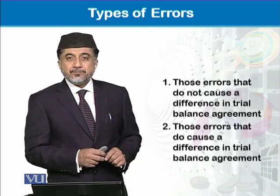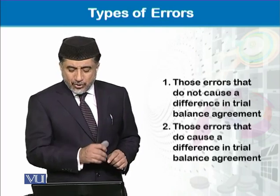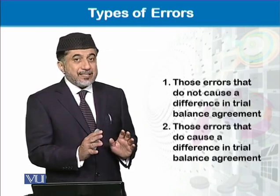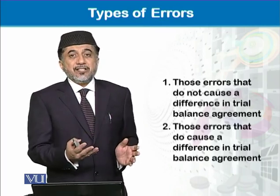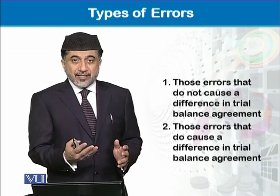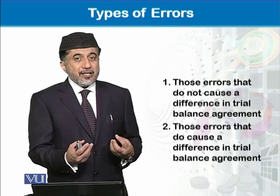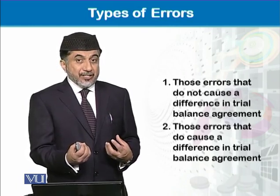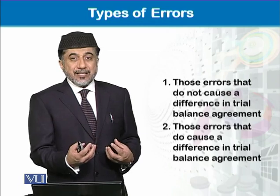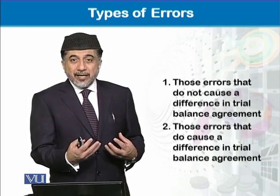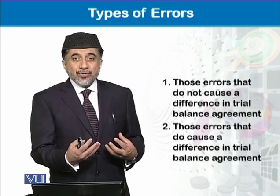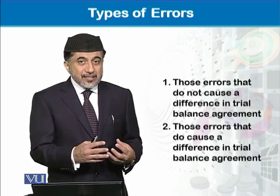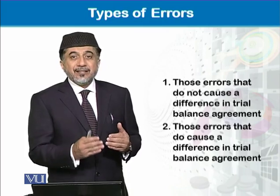The second type of errors are those because of which the trial balance agreement is disturbed — meaning there is a difference in the trial balance. The debit side is not equal to the credit side; either the debit side is heavier or the credit side is heavier. These are the two main types of errors, based on which we will discuss their further categories.